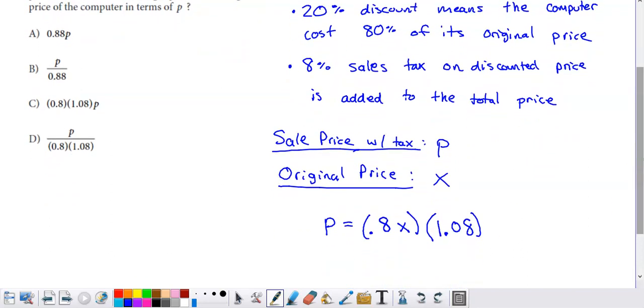So let me fill you in on where I got this expression from. So this expression right here, the P is equal to what you see on the other side of this equation. I knew that I was going to take 20% off the original price. So the sale price was 80% of the original price.